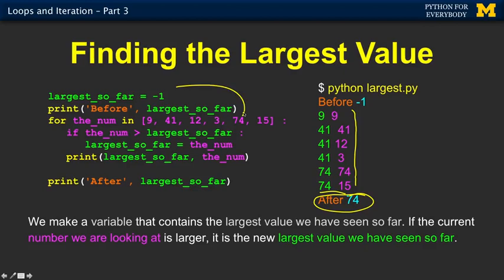So: set something up before, do something to each value, and at the end we get the payoff of what we were looking for in the first place. Up next, we're going to talk about more of these loop idioms — how to find the smallest, how to count things, how to do averages and sums and stuff like that.